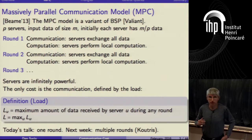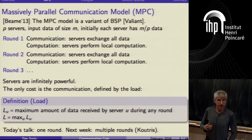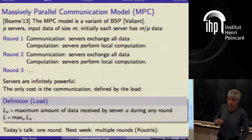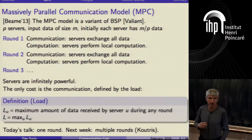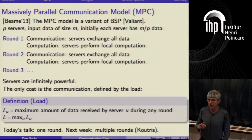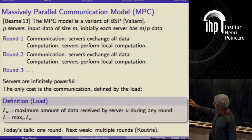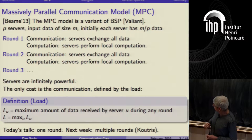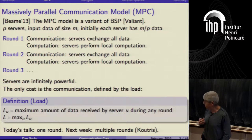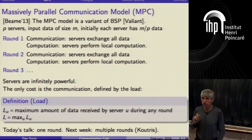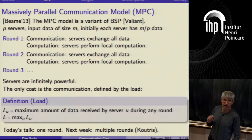Our motivation for studying this problem is very practical — this is how data is processed today. MapReduce, a very popular distributed data processing system, works exactly according to this model and represents one round of the MPC model. More modern systems like Spark also work exactly according to this model. It's a fundamental question to ask how much data we need to exchange in order to compute a particular problem. We have completely solved only the simplest case, which is for one round — that's what I'll talk about today. Next week, Paris Kutrys will talk about what we know about multiple rounds.